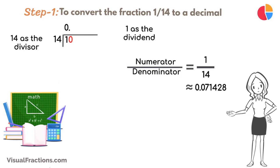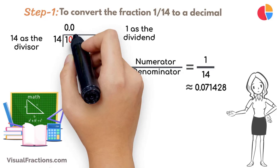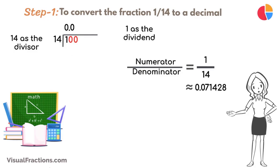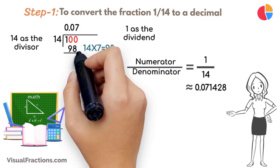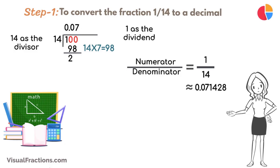14 goes into 10 zero times, so we initially put 0 in the quotient before the decimal. Bring down another 0 to make it 100. 14 goes into 100 seven times, putting 0.07 in our quotient. Multiply 14 by 7 to get 98, and subtract this from 100, leaving a remainder of 2.